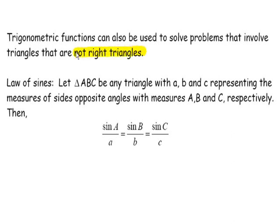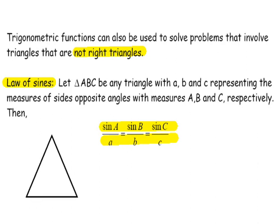Now we're moving on to triangles that are not right triangles. The law of sines is simply a proportion, and it states that sine of A over side a equals sine of B over side b, and sine of C over side c. You won't set it up with all three — you'll usually use two of them and solve for the missing piece. A quick reminder: the capital letter refers to the vertex (the point) and the lowercase letter refers to the side opposite that angle.